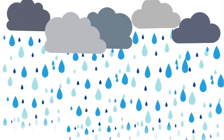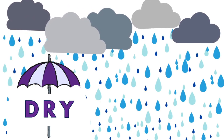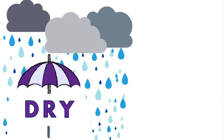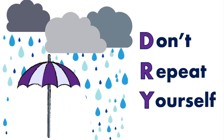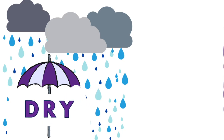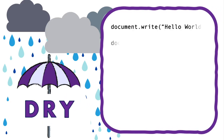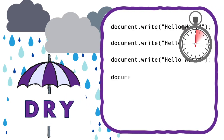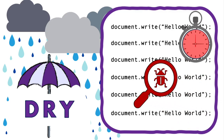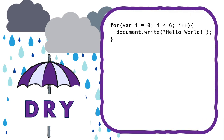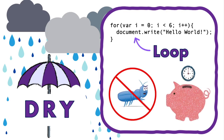Loops are all about keeping your code DRY. DRY means "Don't Repeat Yourself." So what's the problem with repetition? Typing out the same code over and over increases programming time. Also, if you have to write the same thing again and again, you're more likely to make a mistake somewhere. Make your code shorter with a loop — now it's easier to debug and saves you time.